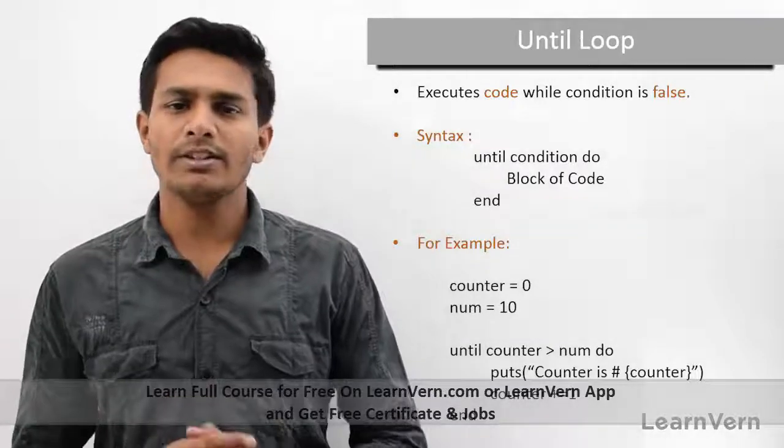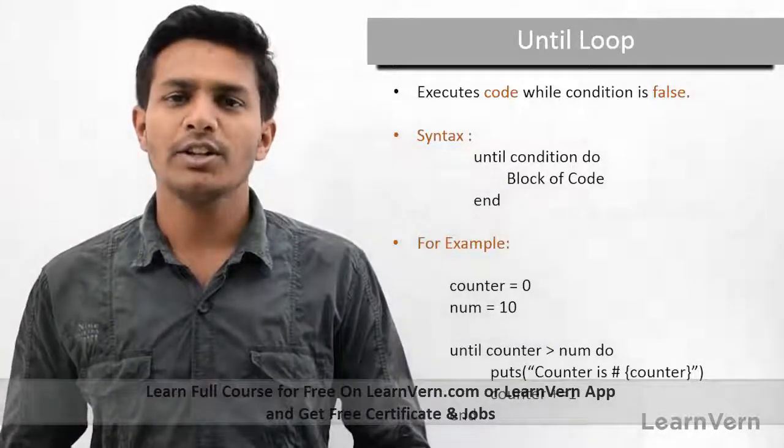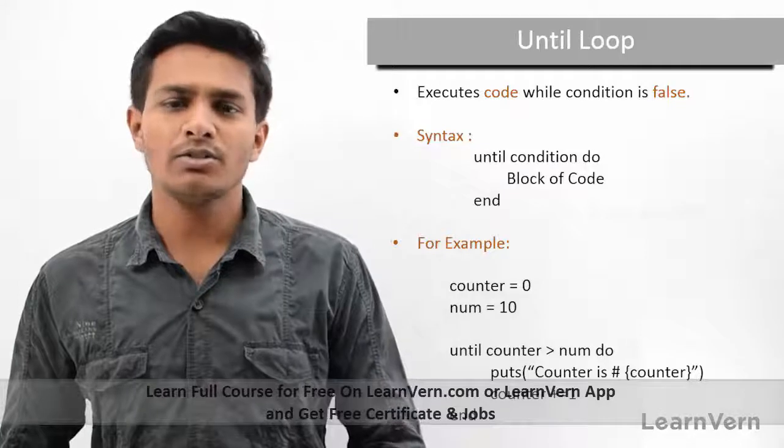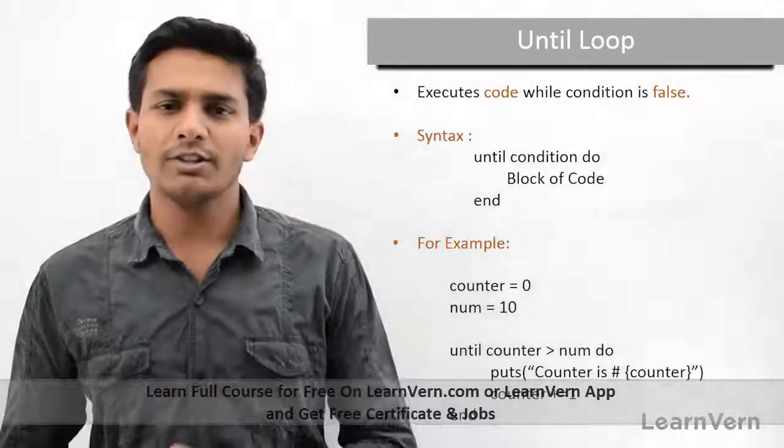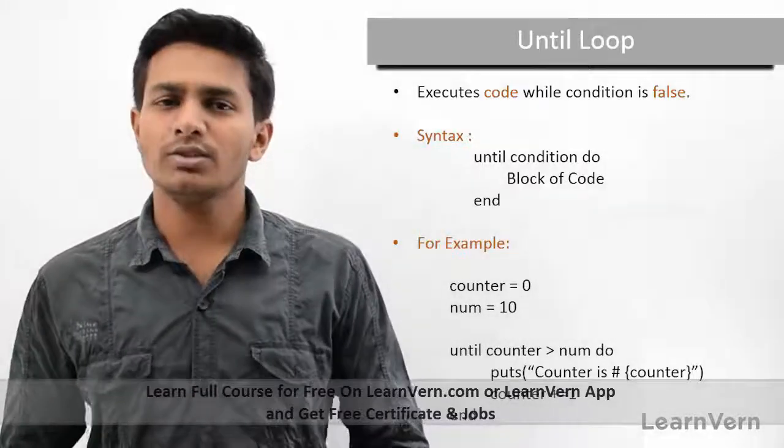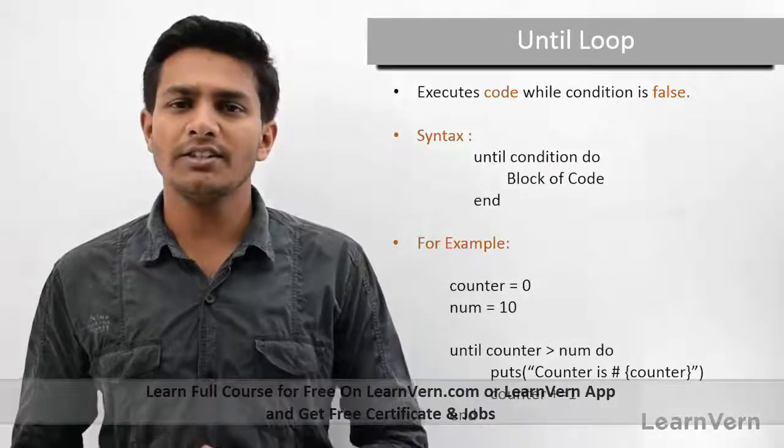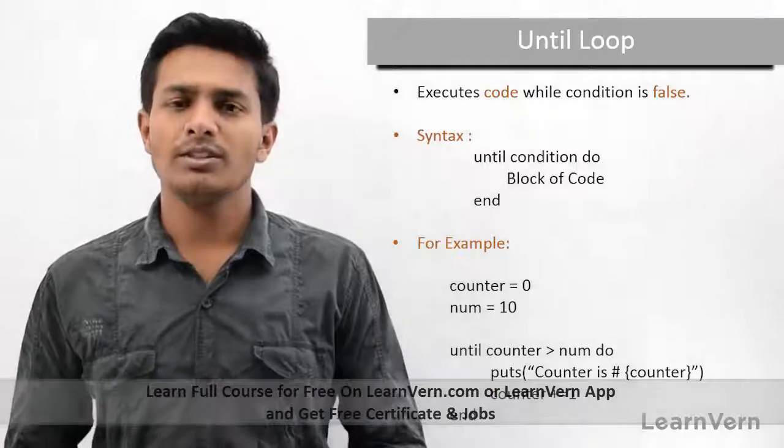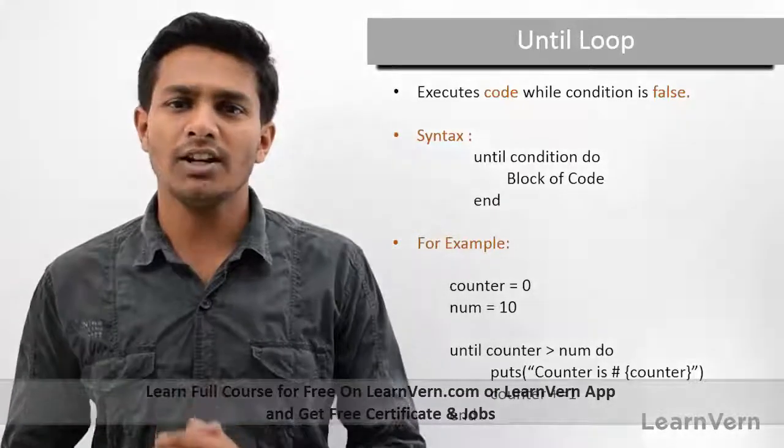Now it again checks for the condition. If one is greater than zero it will return false, it will print my number and again increment the number. This loop goes on until my counter variable becomes greater than the number.